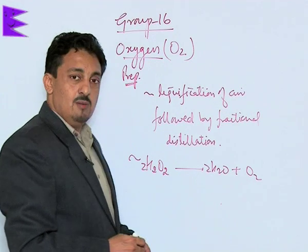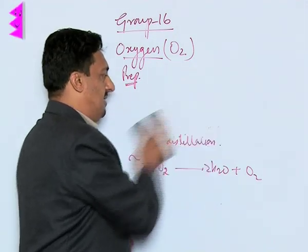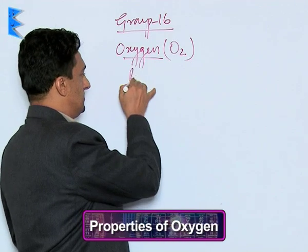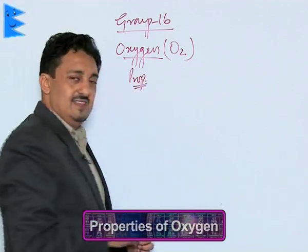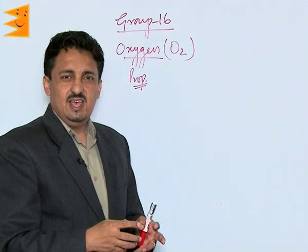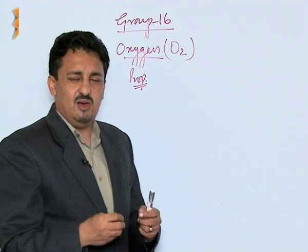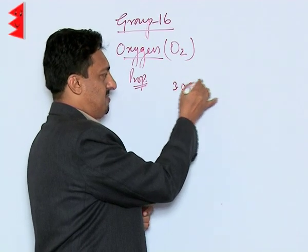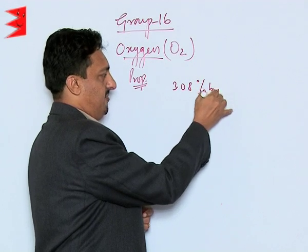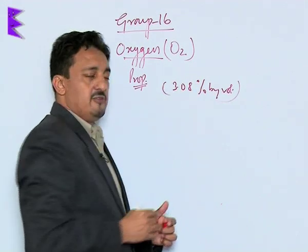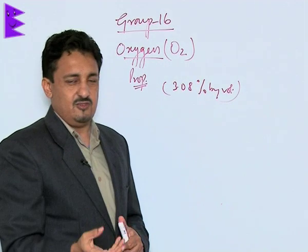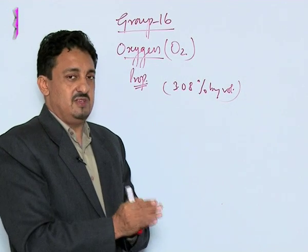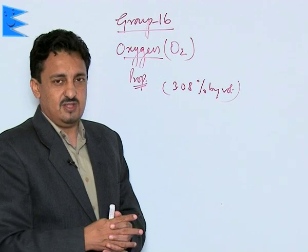So these are the normal preparation methods of oxygen. Now, properties of oxygen: oxygen is a colorless, odorless gas which is very little soluble in water, and its solubility in water is approximately 3.08 percentage by volume. So almost 3.08 ml of oxygen is soluble in 100 ml of water. Its solubility is very less, but this much is sufficient for supporting aquatic life.